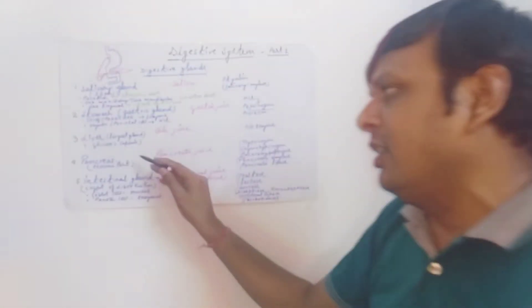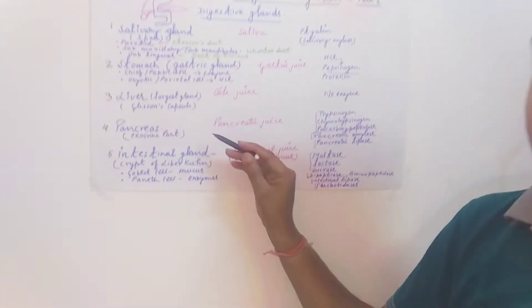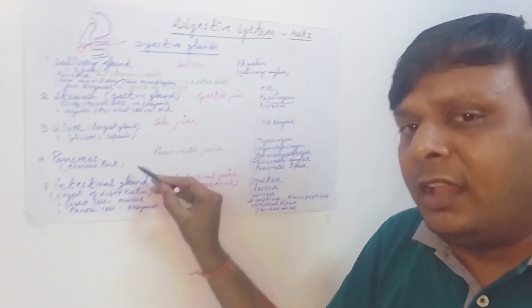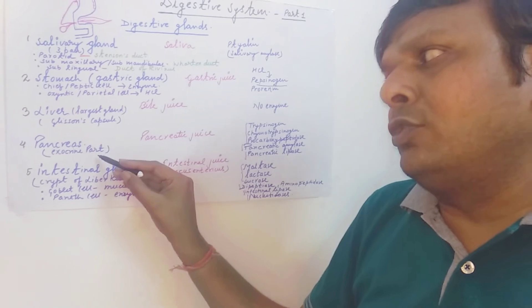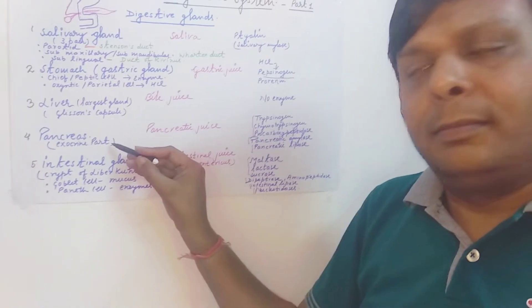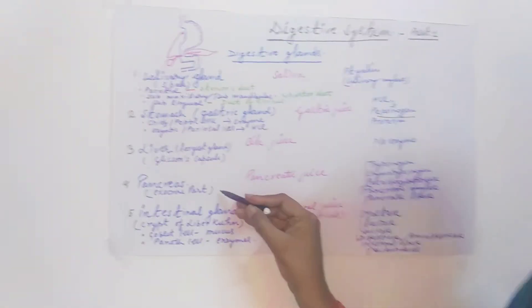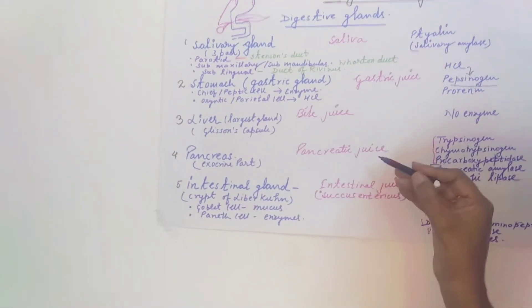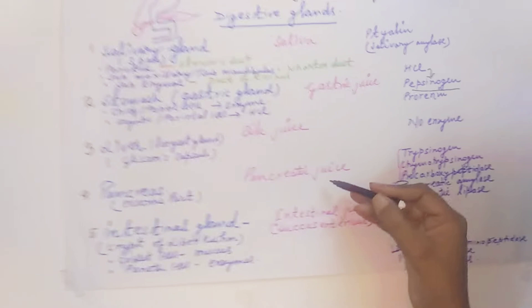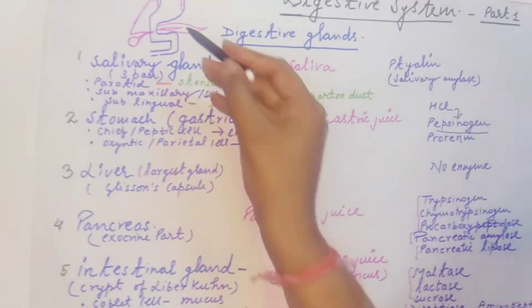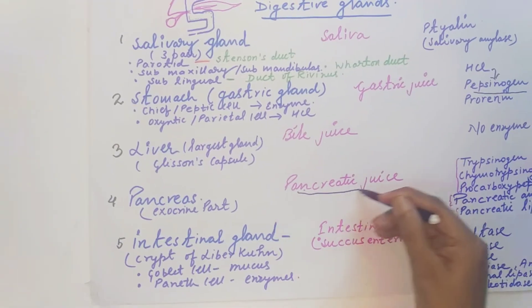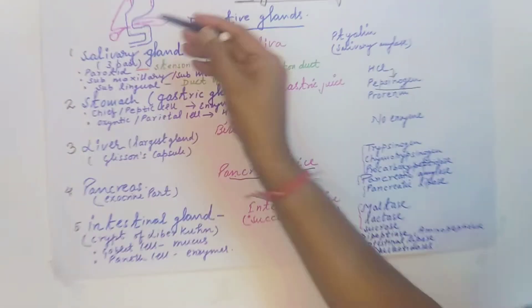The next important gland is the pancreas, which is generally a mixed gland. The endocrine part of the pancreas mainly secretes the hormones insulin and glucagon, which maintain blood sugar levels. The exocrine part of the pancreas mainly consists of pancreatic acini, which secrete pancreatic juice. This pancreatic juice is added into the small intestine at the duodenum, the first part of the small intestine.